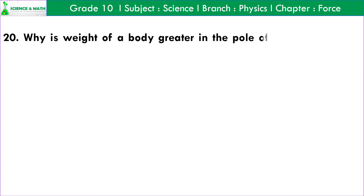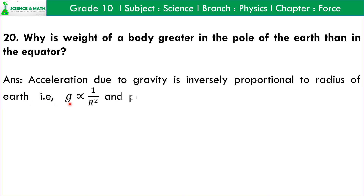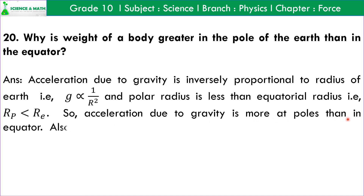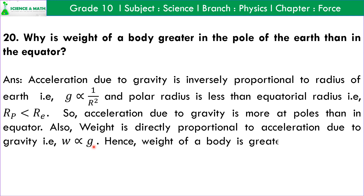Question number 20: Why is the weight of a body greater at the poles of the earth than at the equator? Answer: Acceleration due to gravity is inversely proportional to the square of the radius of the earth, that is, g ∝ 1/r². Polar radius is less than equatorial radius, that is, rp < re. So acceleration due to gravity is more at the poles than at the equator. Also, weight is directly proportional to acceleration due to gravity, that is, w ∝ g. Hence, weight of a body is greater at the poles than at the equator.